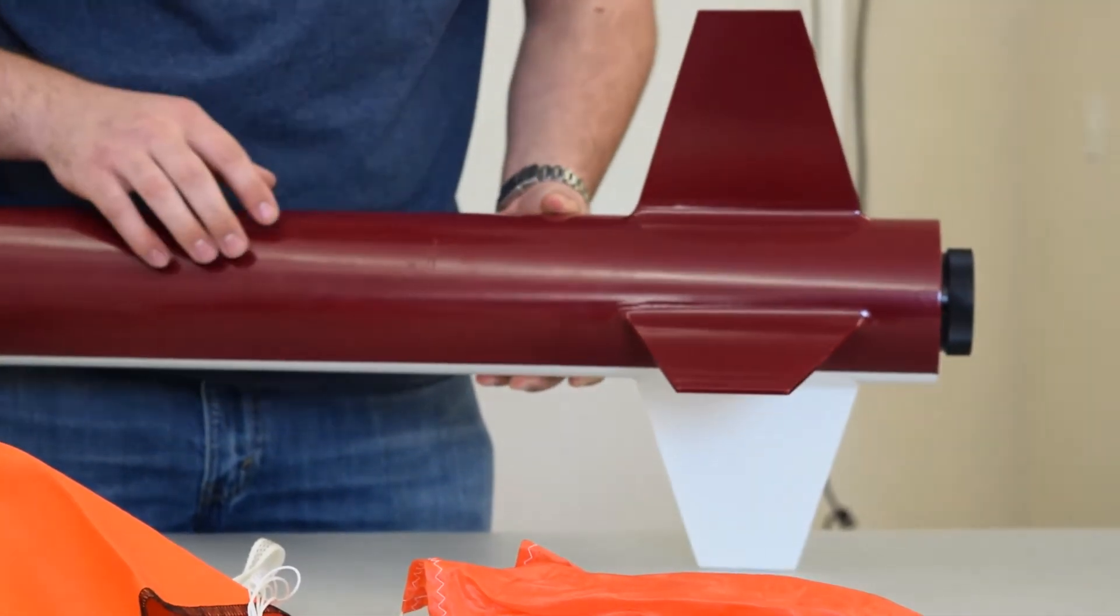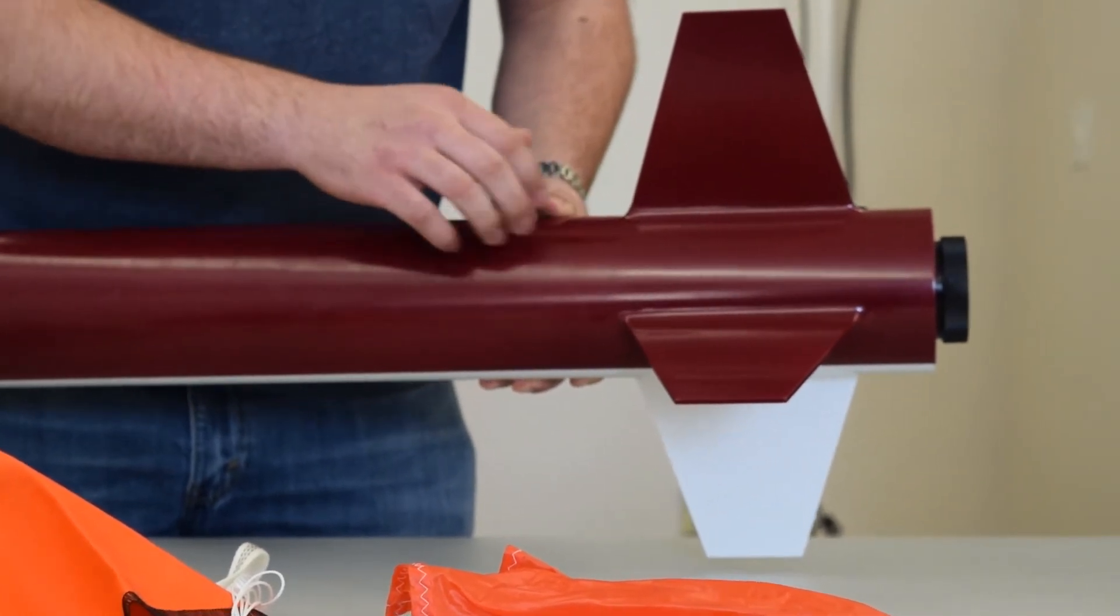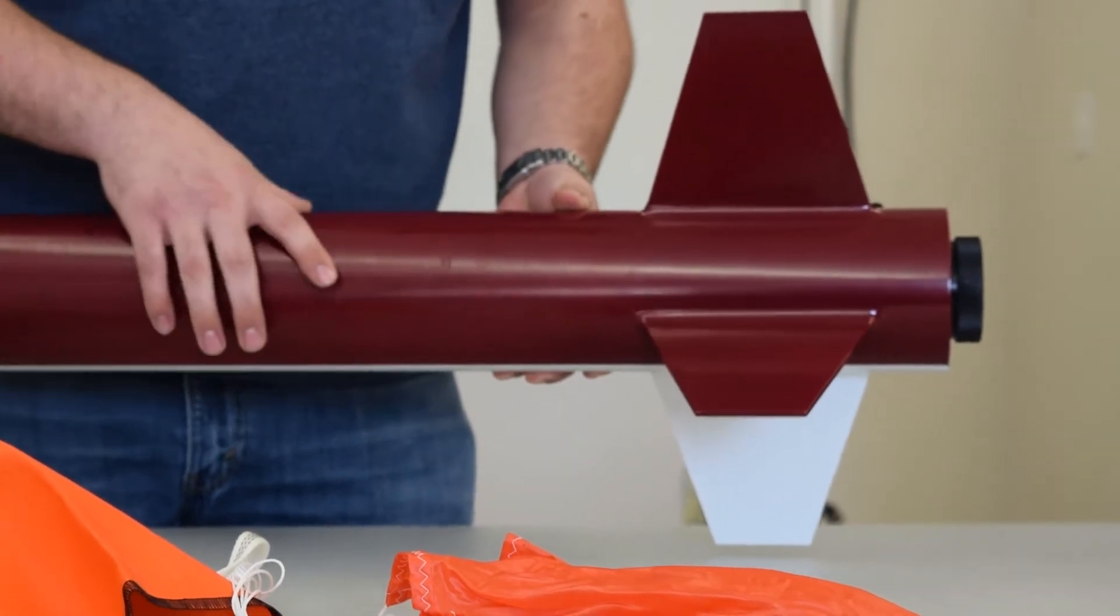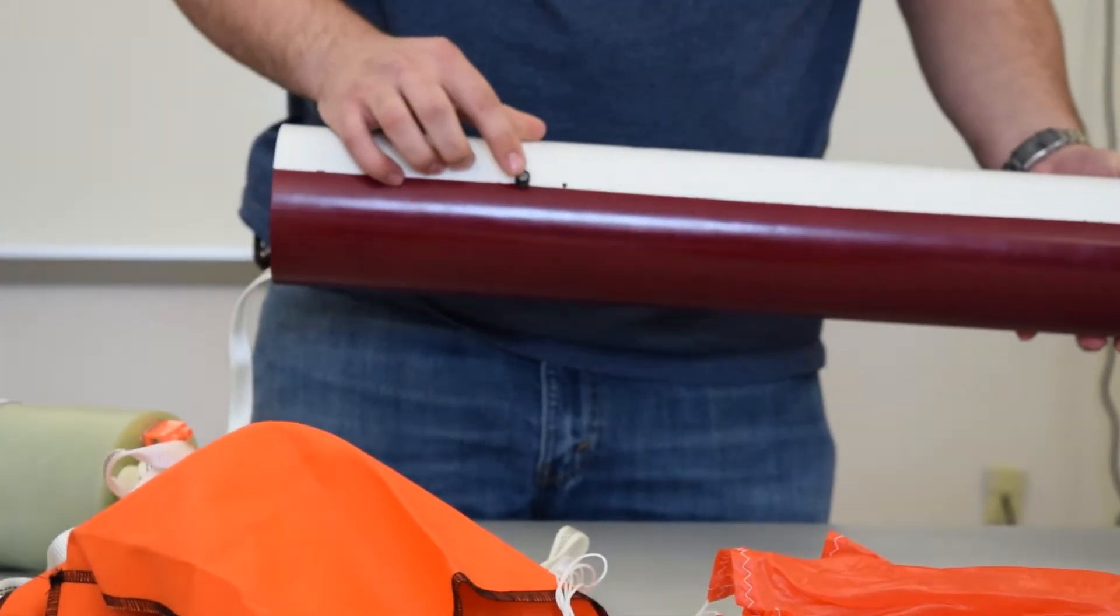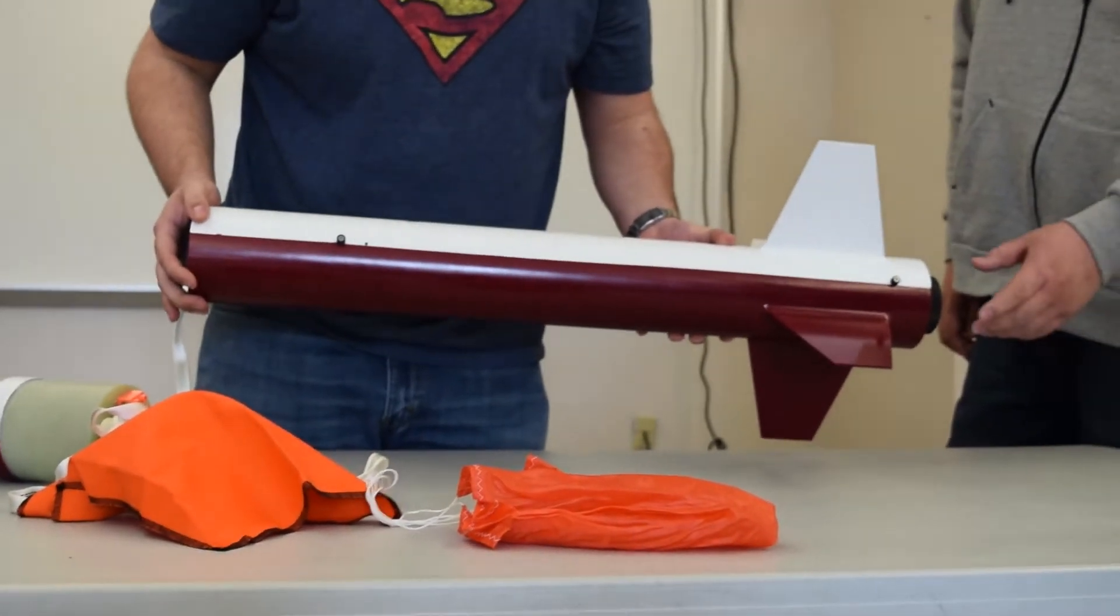And on top of that, to give it a nice clean finish, we used wood filler. And that wood filler has no structural integrity, it's just to make it look nice. And then of course we have our rail buttons, which guide the rocket as it's leaving the launcher.